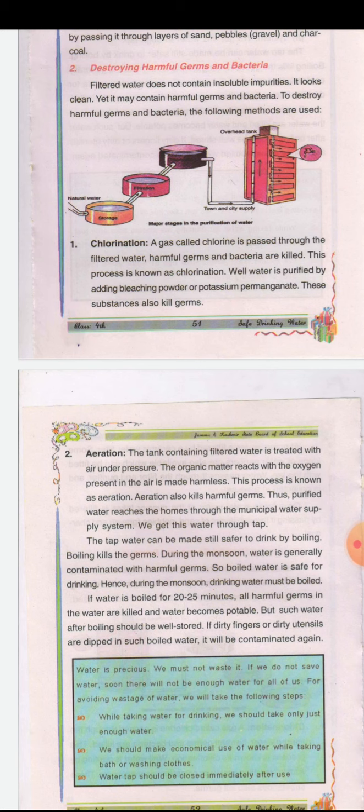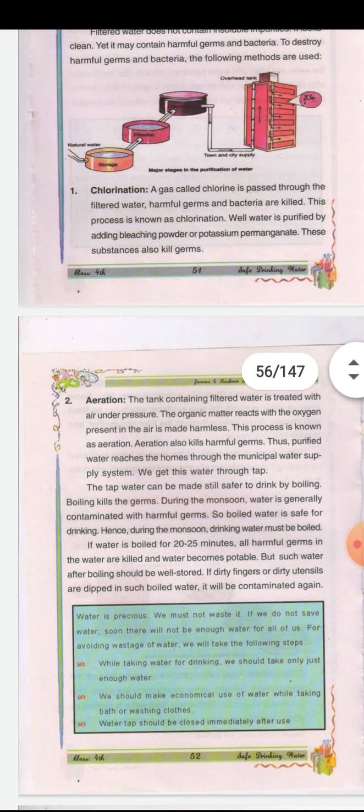The first process is called chlorination. By passing chlorine through the filtered water, harmful germs and bacteria are destroyed. This process is known as chlorination. Water is also purified by adding bleaching powder or potassium permanganate — these substances also kill germs.